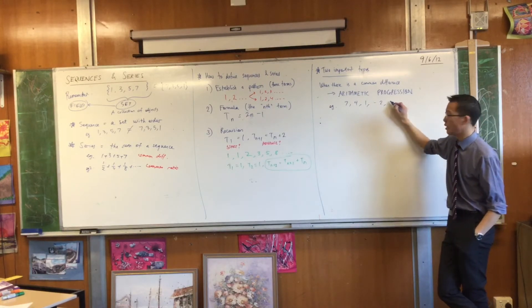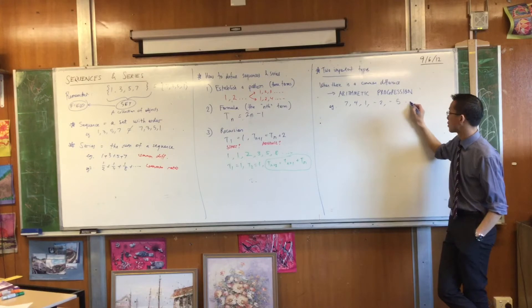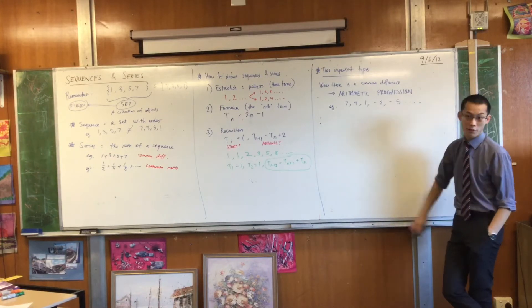Negative 2 and then negative 5 and then dot, dot, dot. So it can keep on going forever if I want it to.